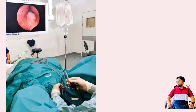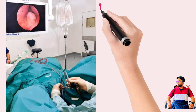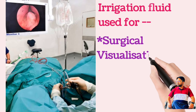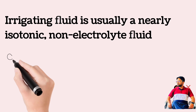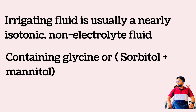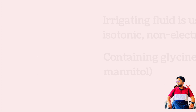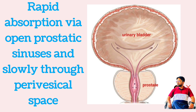Benign prostatic hyperplasia is often treated surgically by transurethral resection of the prostate. This procedure involves resection via a cystoscope with continuous irrigation of the bladder to aid in visualization and removal of blood and resected material. This irrigating fluid is usually a nearly isotonic non-electrolyte fluid containing glycine or a mixture of sorbitol and mannitol. The procedure is accompanied by absorption of irrigating fluid via direct intravascular access through the open prostatic sinuses and more slowly through absorption from the perivesical space.